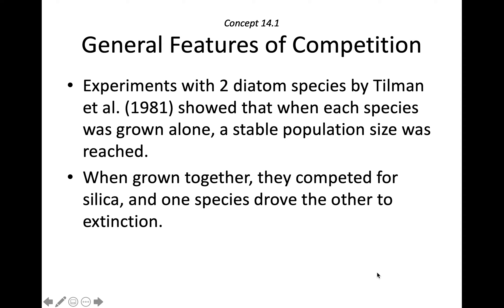More experiments in competition show that competition is very often an asymmetrical process. David Tilman and colleagues demonstrated competition between two diatom species for the resource silica — a food resource — by growing them first alone and then in competition with each other. He did experiments with two diatom species, which are protists, and when grown together, they competed for silica, and one species drove the other to extinction.